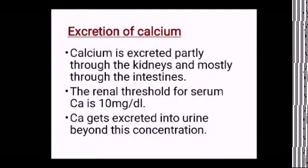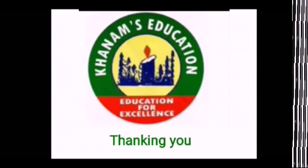Regarding excretion, calcium is excreted partly through the kidneys and mostly through the intestines, in the form of urine and feces. The renal threshold for plasma calcium is 10 mg per deciliter. The disorders of calcium metabolism will be discussed in the next class. Allah Hafiz.